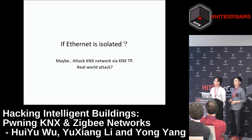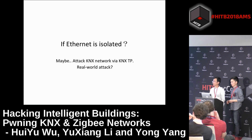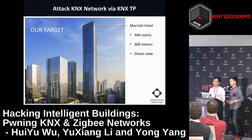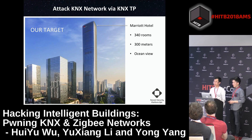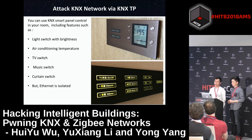If the Ethernet network is isolated, maybe we can attack the KNX network via KNX TP physically. Our target was the Muriel Hotel — a six-story building, 300 meters tall with 340 rooms, which had deployed a KNX network. We went to the hotel and in the rooms found many devices using KNX. You can use the KNX smart panel to control your room, including features such as light switch, air conditioning temperature, TV switch, music switch, and curtain switch.